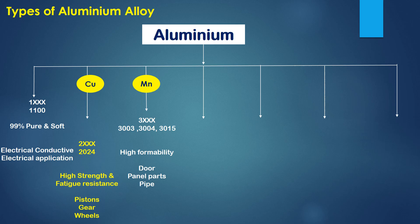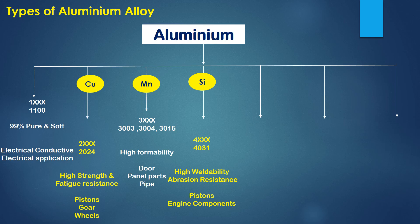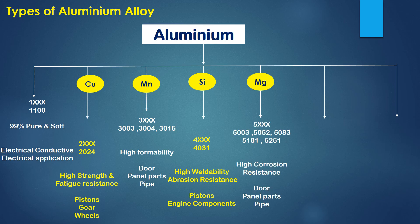The 3000 series is alloyed with manganese and has high formability. Door panels, panel parts, and pipes are manufactured using this Aluminium. The 4000 series is alloyed with silicon and its qualities are high weldability and good abrasion resistance. Piston and engine components are made from 4000 series Aluminium alloy. The 5000 series is alloyed with manganese and has good corrosion resistance; door panel parts and pipes are made from this series.